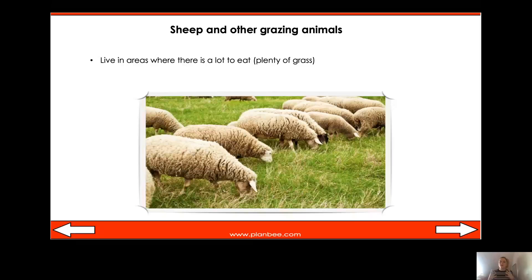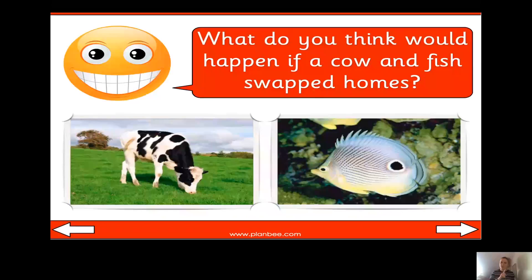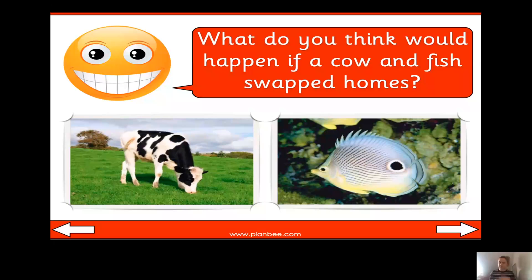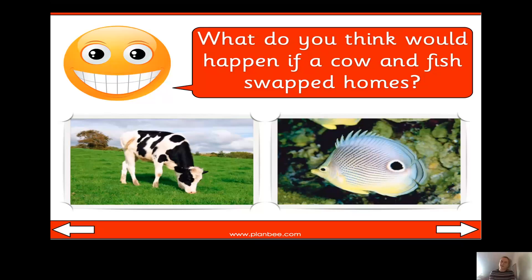Well done if you got those three right! Now here we have a picture of a cow and a fish. What do you think would happen if a cow and a fish swapped homes? Remember, a cow lives in fields because there's lots of grass, and a fish lives underwater because it has gills and a smooth body so it can move easily in the water.